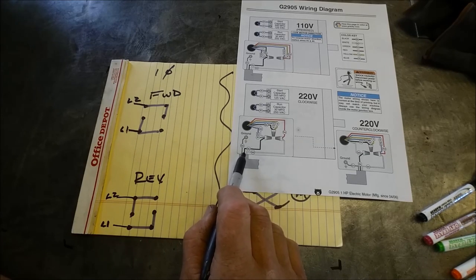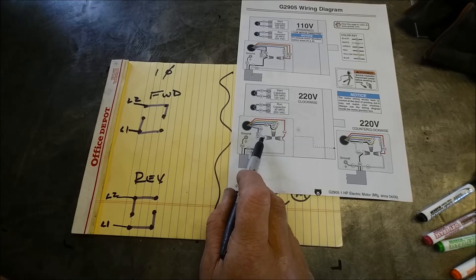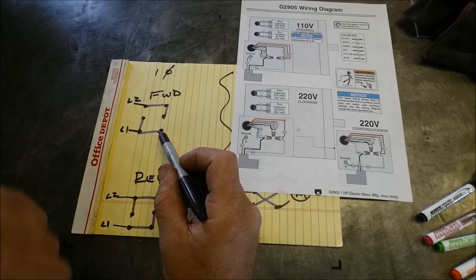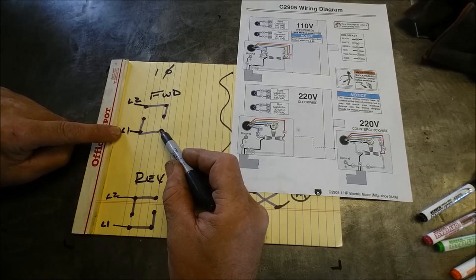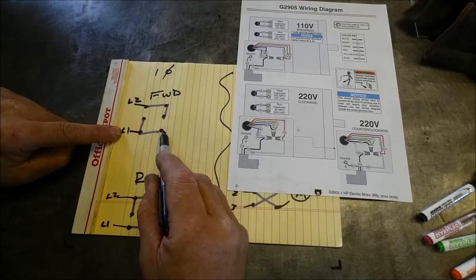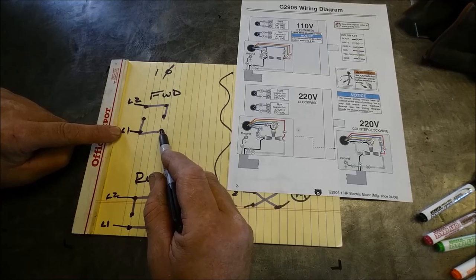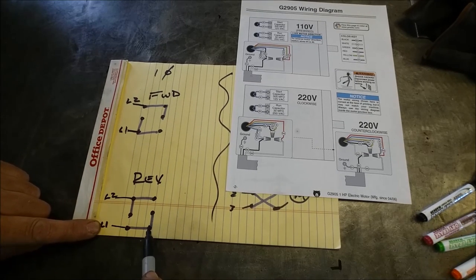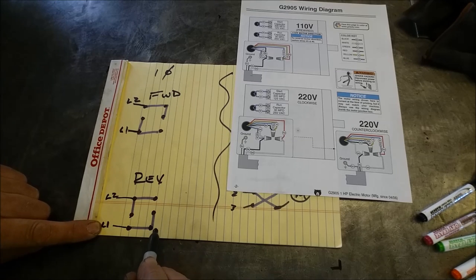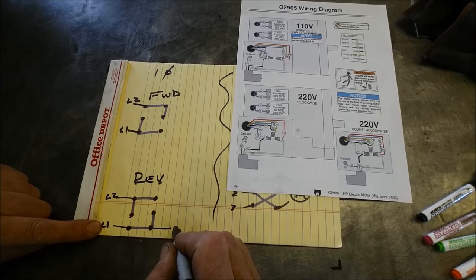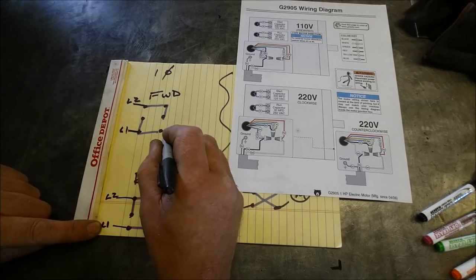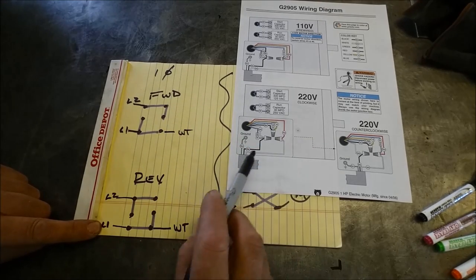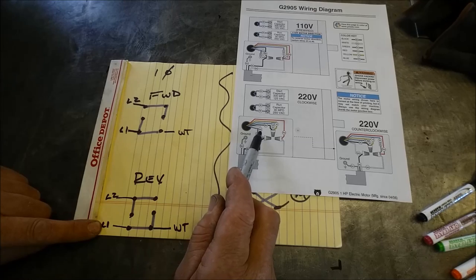Now L1, we always want it on white no matter what. So we go to here to L1, we see that this terminal is energized with white on forward run. And here on L1 we see this terminal is still energized with white on L1. So we're going to bring this out to the WT, which is represented right here, the WT.